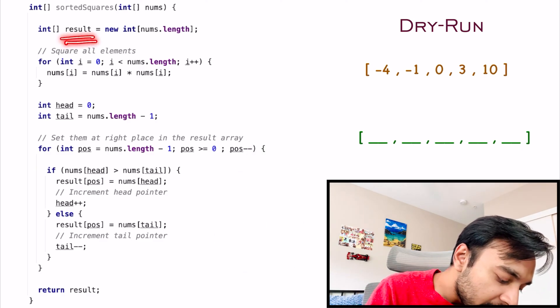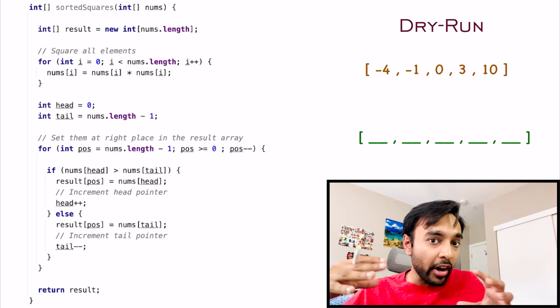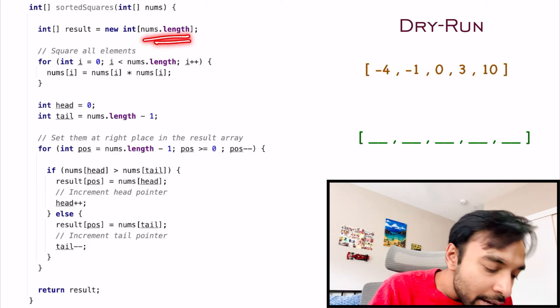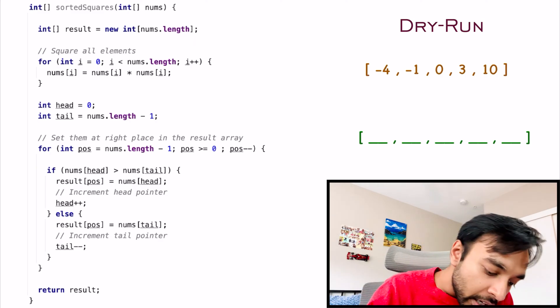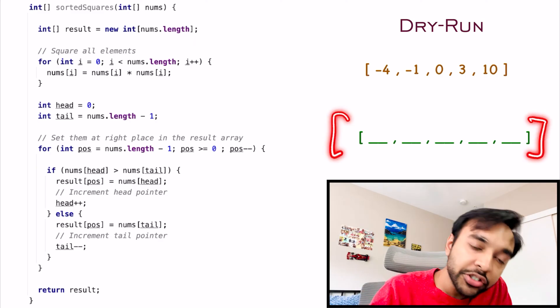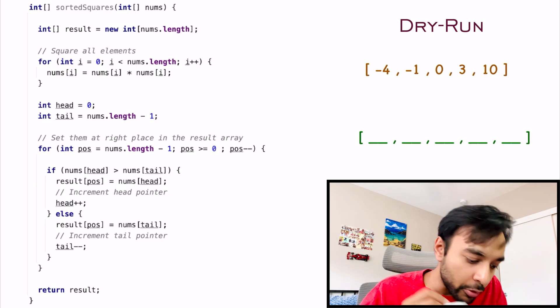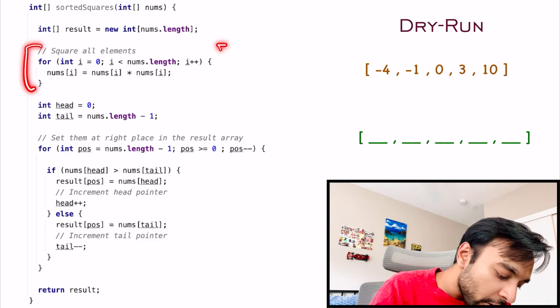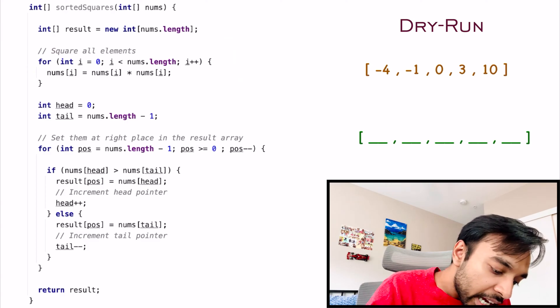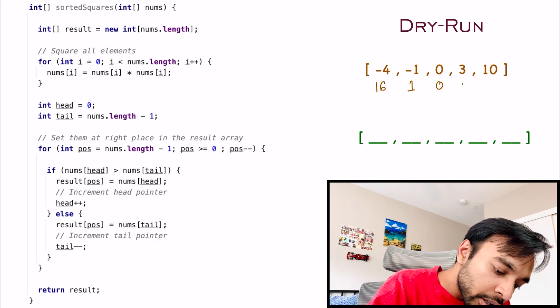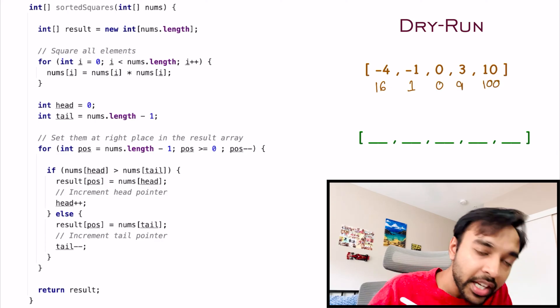First of all, we create a result array that will store all of our squares in a sorted order. And, its length will be the same as the input array length. So, this is the array where I will store all of my results. Now, what is the first thing that we do? First of all, we will square all of our elements. So, as soon as I square all these elements, it will become 16, 1, 0, 9 and 100.